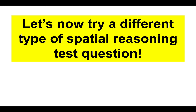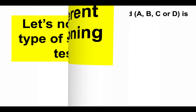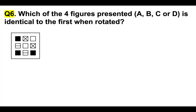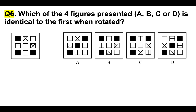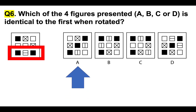Fantastic, well done! Now let's try a different type of spatial reasoning test question. Question six: which of the four figures presented — A, B, C, or D — is identical to the first when rotated? We need to look at the figure on the left and take one particular element of it — for example, the bottom row of shapes — then try and find that in A, B, C, or D. I've chosen that part highlighted in red and will work along to see whether I can find it when the figure is rotated.